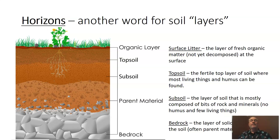Here's our last bit for today: we're going to look at these things called horizons — horizons is just a fancy word for soil layers. At this point you've probably been able to spot the surface litter, which is all that fresh organic matter that's not yet decomposed. Underneath that surface litter, we find a soil layer called topsoil. Topsoil is important — it is where most living things are found, where plant roots are, really the layer of soil that supports plant growth. That's where we find the decayed matter, the humus, where we find all of our life in soil.